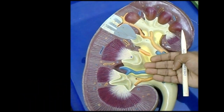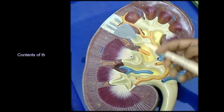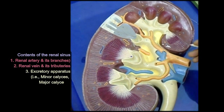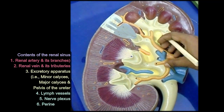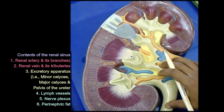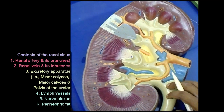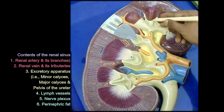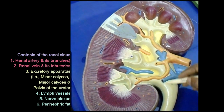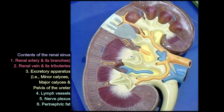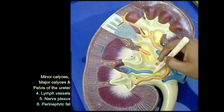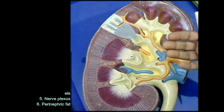The contents of the renal sinus include the vessels — renal artery and its branches, renal vein and its tributaries — and the excretory portion: the minor calices, the major calyx, and the pelvis of the ureter. There are also some fats and lymphatics present in the renal sinus.